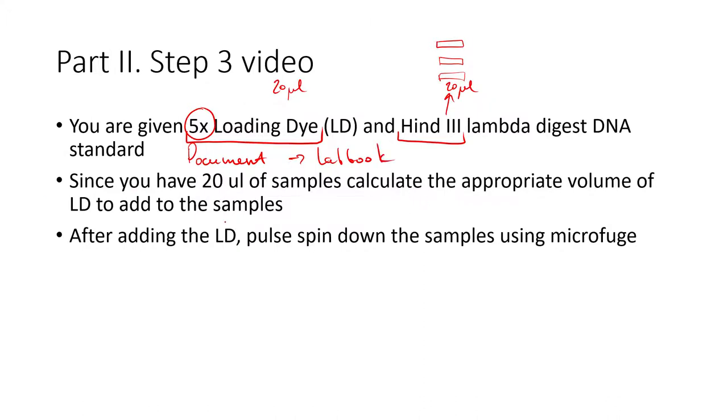Okay so after addition of loading dye you should spin down this sample using microfuge so that in your tube they really could mix. So let's say that this is your sample and this is your loading dye. If you don't bring them down you won't be able to mix them properly. So you spin them everything goes down and in this case of course we have the mixture of your sample and loading dye.